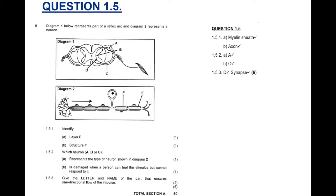Question 1.5. Diagram 1 below represents part of a reflex arc. So, that's a reflex arc. And diagram 2 represents a neuron. Now, if you remember your work, we asked you to learn how to draw a motor neuron and a sensory neuron. Here, you'll know that this is a sensory neuron.